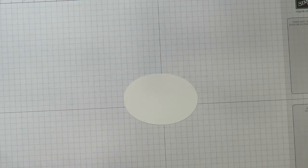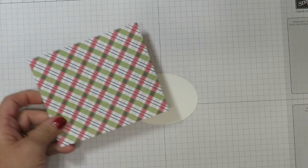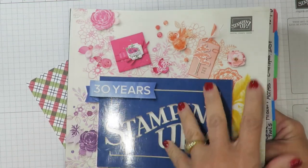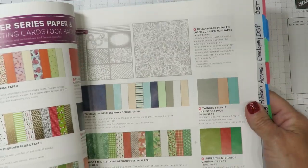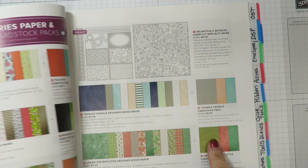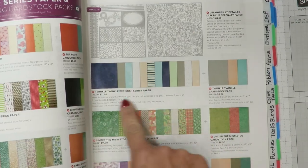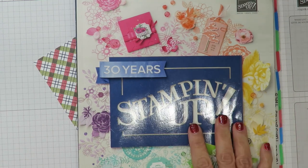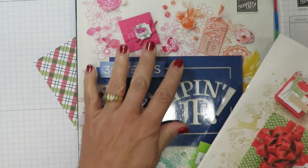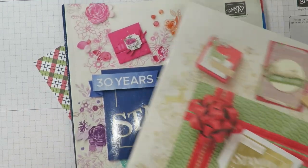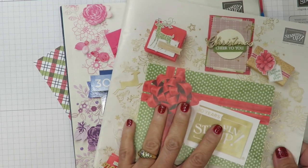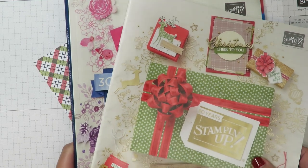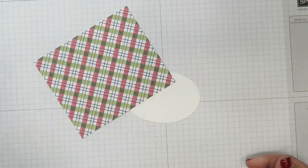I'm going to be using designer series paper from the annual catalog that's called Under the Mistletoe. The annual catalog designer series papers start around page 188 and you'll see that designer series paper there. If you don't already have a Stampin' Up demonstrator and you would like a copy of the current annual catalog and the new holiday catalog that debuted on September 5th, just leave me a comment below. I'll be happy to send you a complimentary copy.